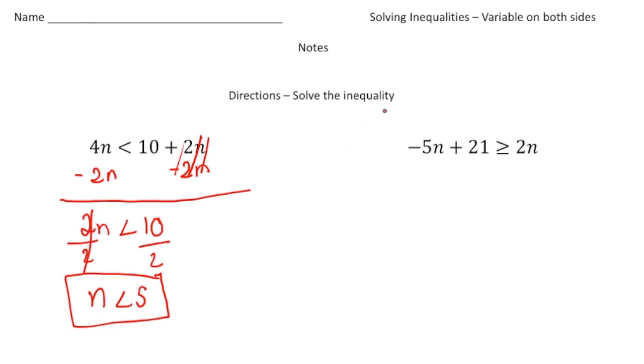This one over here is the same type of problem, where we have negative 5n plus 21 is greater than or equal to 2n. Notice we have an n on this side and also an n on this side. I'm going to add 5n to both sides. When I do that, these cancel out, and now we have 21 is greater than or equal to 7n. Now we're going to solve for n, so divide both sides by 7, and n is going to be less than or equal to 3. And there's the answer.